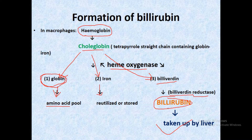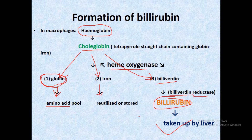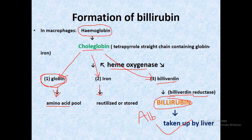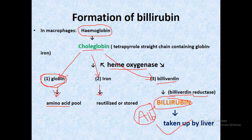This unconjugated bilirubin is transferred into the plasma along with albumin, a plasma protein that helps transport bilirubin in the circulation.